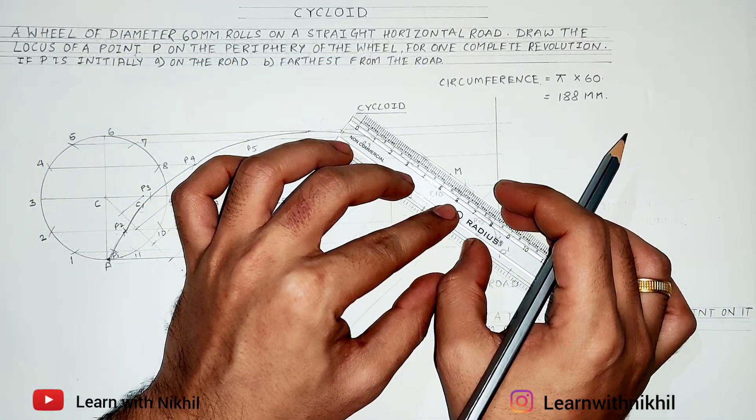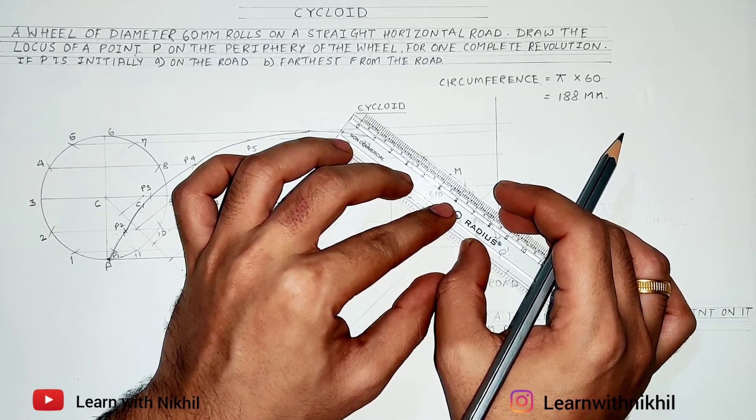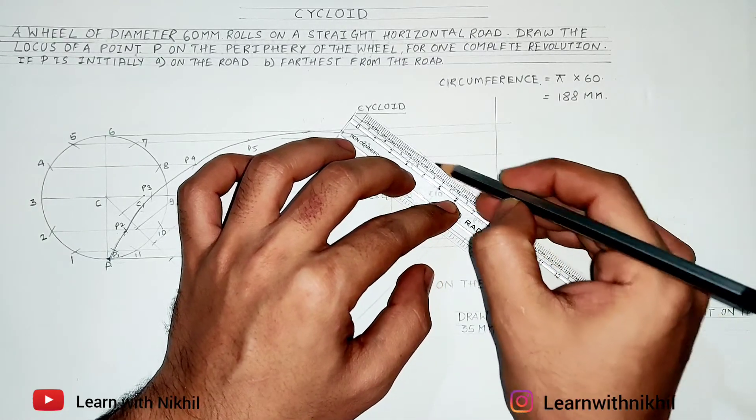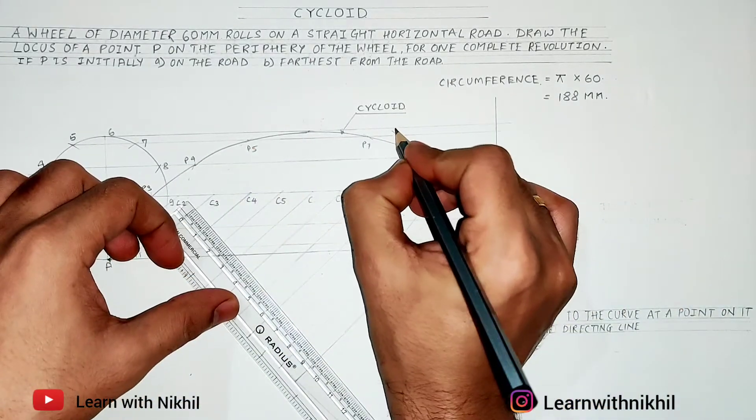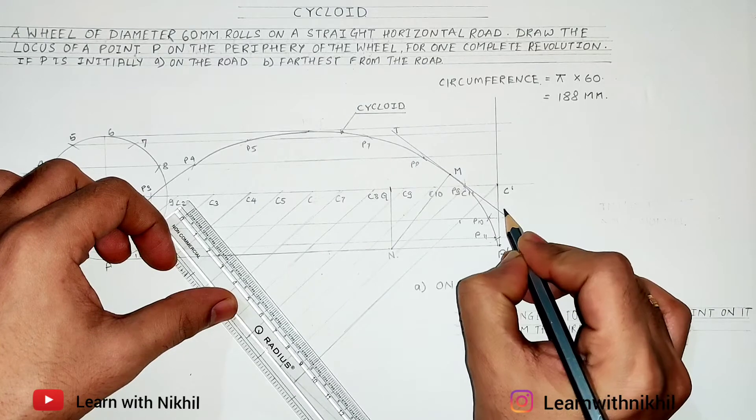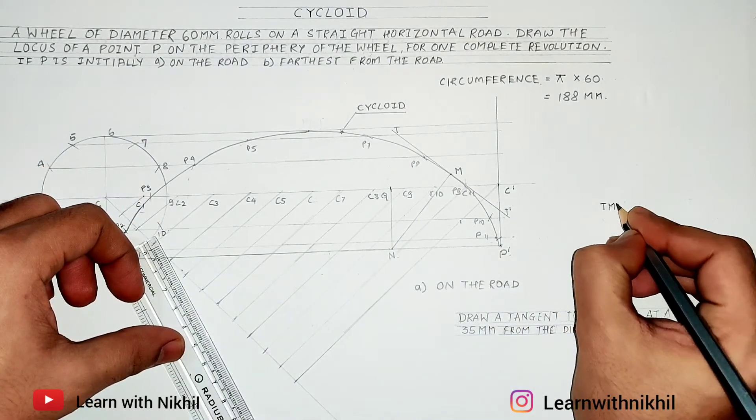M or the line NM, draw a perpendicular line. See how I am drawing the perpendicular line. I have just aligned my scale line and I've drawn the perpendicular line. You can use protractor to do it also. So TM T'